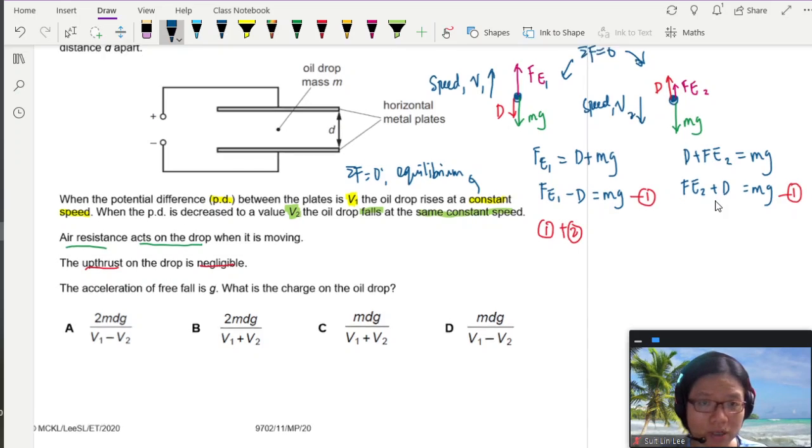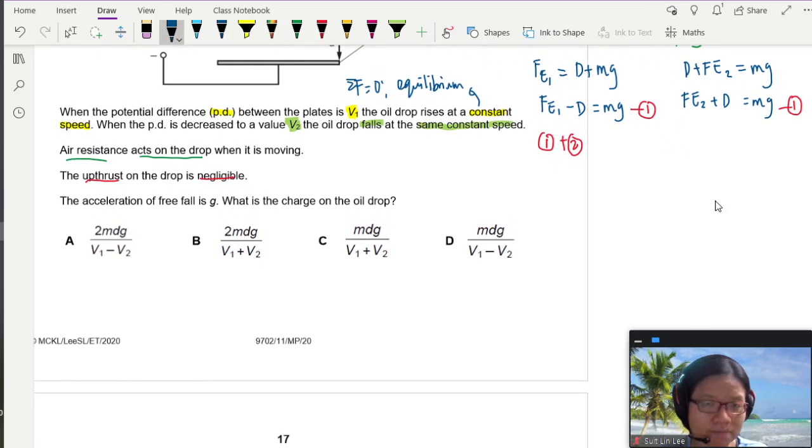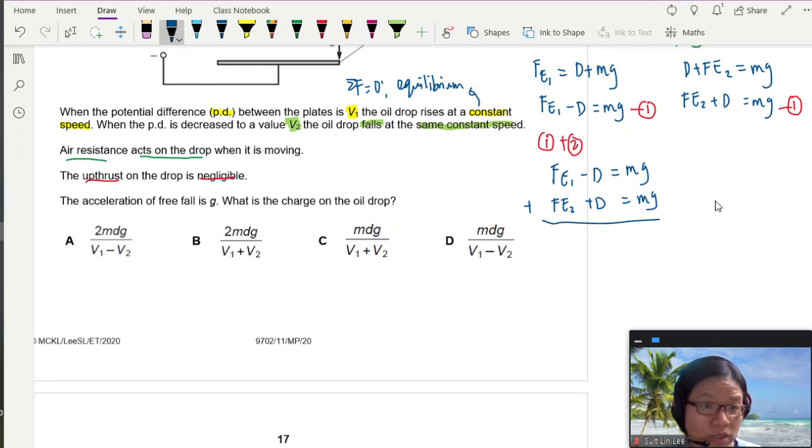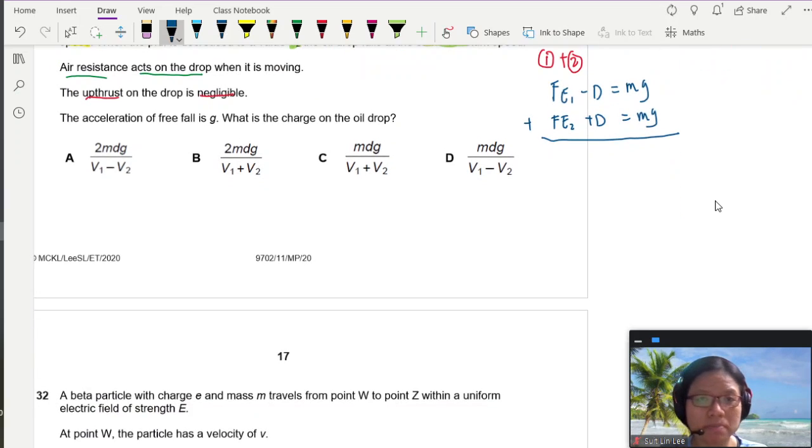I know that there's no term in Fe1, so I'll probably have to substitute a bit later. But no matter. So here, Fe1 minus D is equal to mg plus Fe2 plus D is equal to mg. So I'm writing an extra step for you in case you need it. So minus D plus D, it cancels out. Bye-bye. And what you have left is Fe1 plus Fe2. And this Fe1 plus Fe2 is equal to 2 mg.